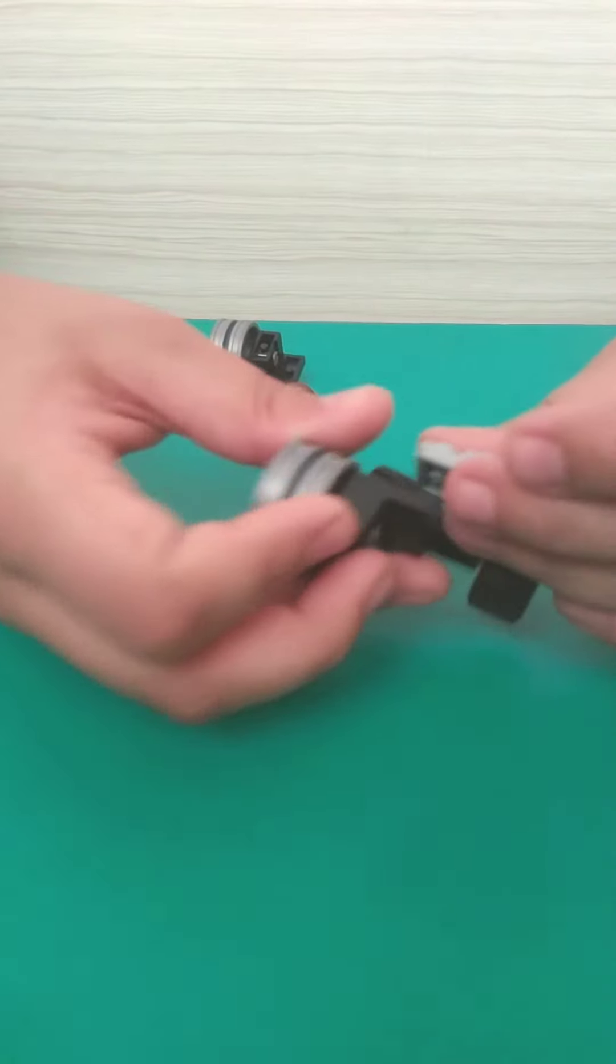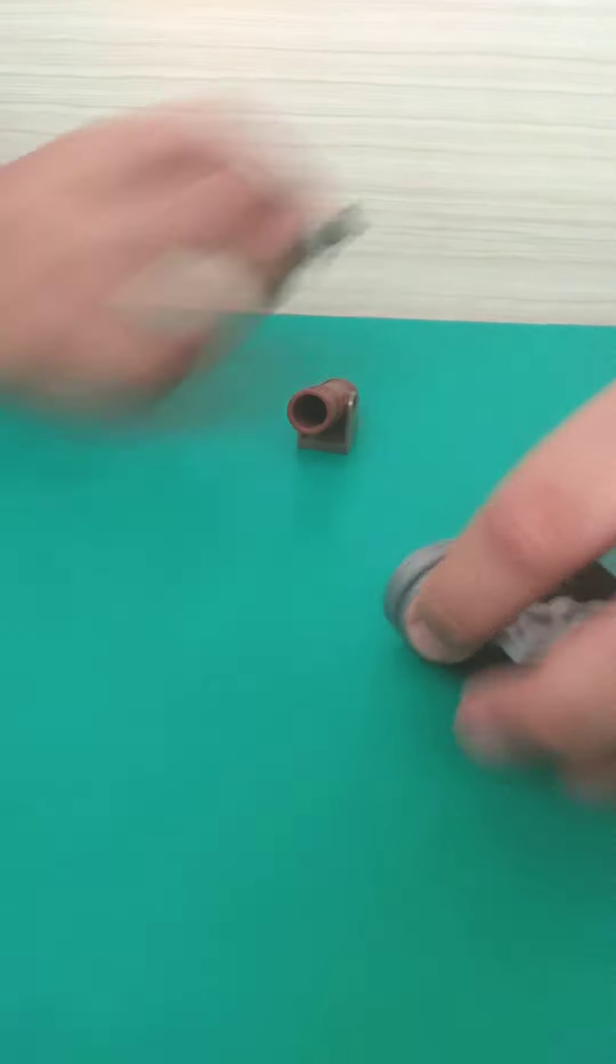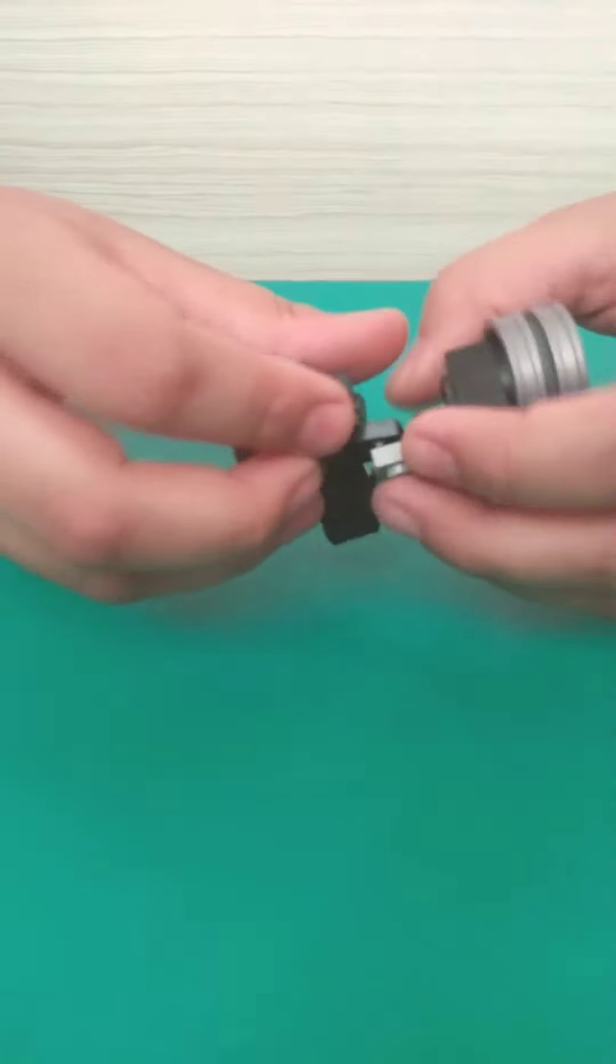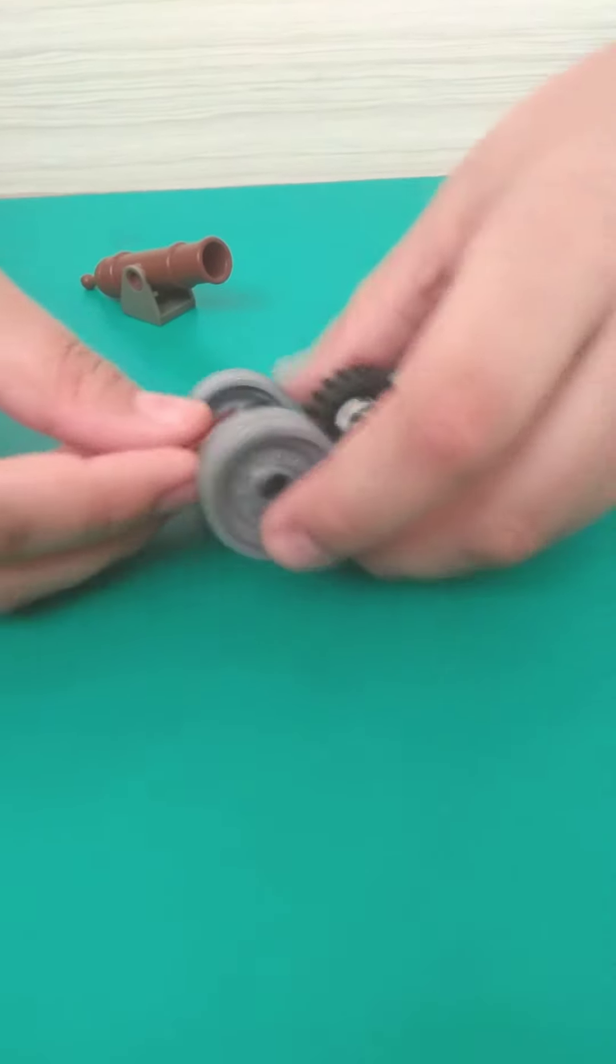Then take these two wheels. One wheel over here and the second wheel over here. Then take your 2x2 part and fix it over here.